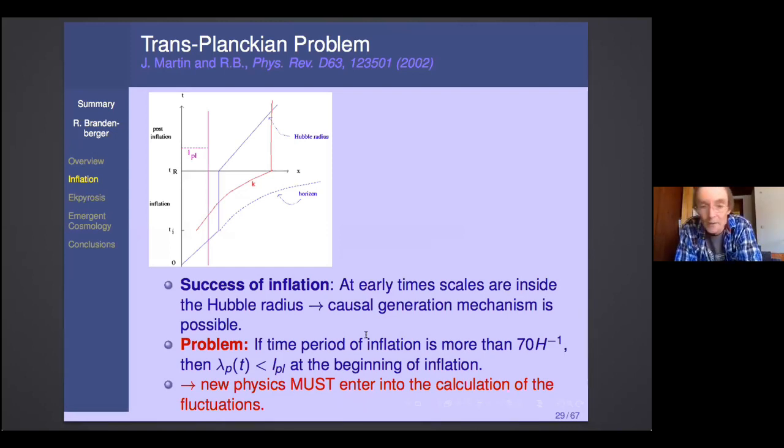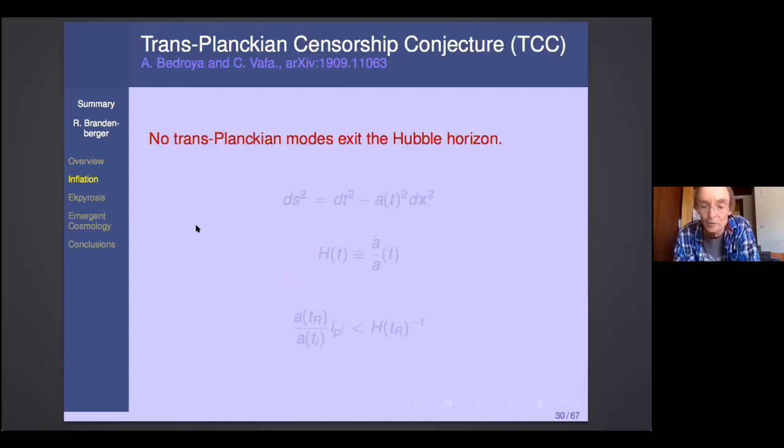So now let me turn to the other set of objections, which is a generalization of Penrose's cosmic censorship conjecture. The starting point for this is a problem for cosmological fluctuations in inflation, which Jerome, Maaght and myself pointed out 20 years ago. Which is the fact that if inflation lasts for a long time, then scales that we observe today start out in this trans-Planckian region of ignorance.